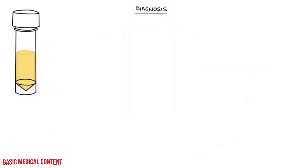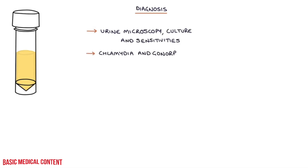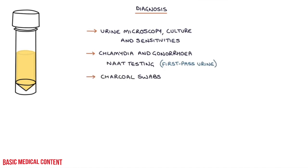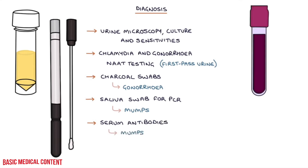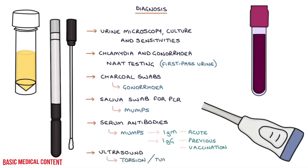Investigations that can help establish a diagnosis are urine microscopy culture and sensitivities, and chlamydia and gonorrhea NAAT testing on a first-pass urine sample. A charcoal swab can be taken of purulent or pussy urethral discharge to look for gonorrhea and test for culture and sensitivities. A saliva swab for PCR testing can be used to look for mumps if suspected, and you can check serum antibodies for mumps — IgM suggests acute infection and IgG suggests previous infection or vaccination. An ultrasound can also be useful to assess for torsion or tumours of the testicles.